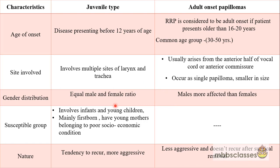The juvenile type involves infants and young children, and it is seen to occur more in the first born when the mother is infected and when they belong to poor socio-economic conditions. By nature, the juvenile type is a more aggressive disease with a tendency to recur, while the adult type is less aggressive and does not recur after surgical removal.